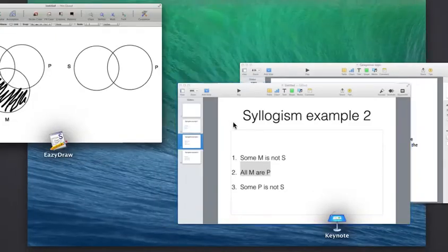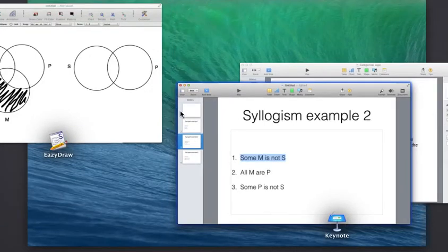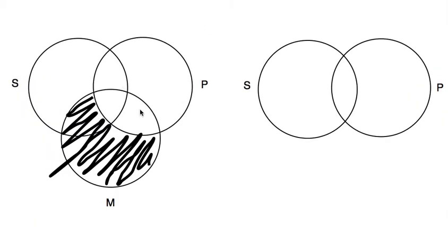Now let's go back to our first premise, the particular statement: Some M is not S. All right. What does that look like? Well, there's something that is an M that is not an S. So it has to be within the M category, and it has to be outside of the S category. So we know it has to be in here, but it also can't be in here.